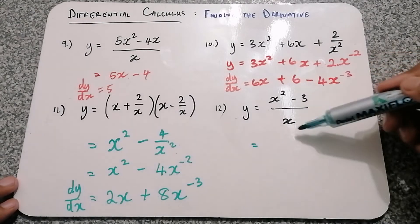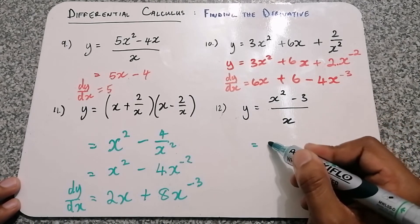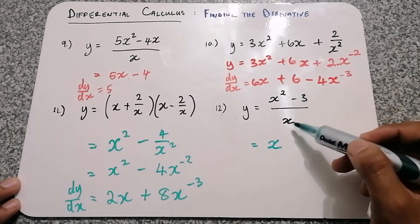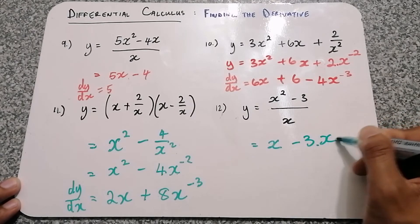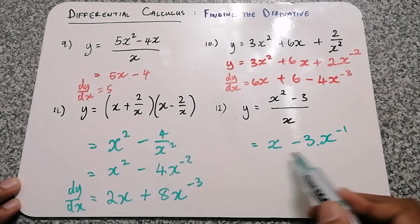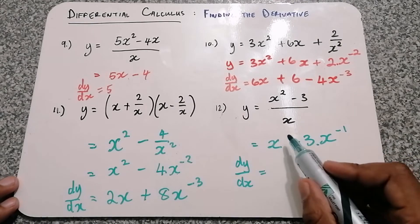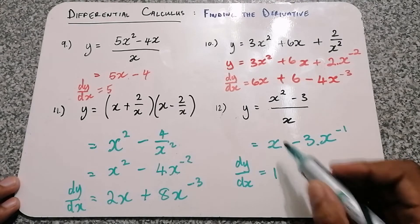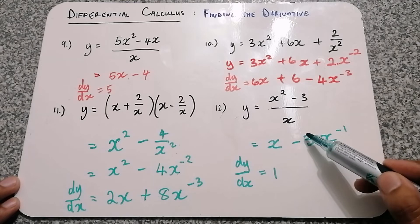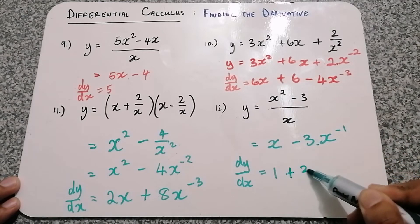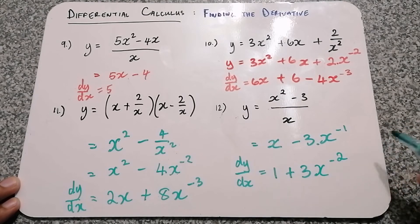For question 12, we're dividing both terms by x. x squared divided by x is just x. Negative 3 divided by x can be written as negative 3 times x to the power of negative 1. Now we differentiate. The derivative of x is just 1 — the number in front of the x. For the second term, we multiply the negative 1 by the negative 3, giving positive 3, then minus 1 from the exponent giving negative 2.